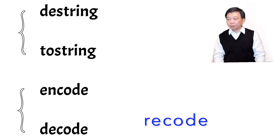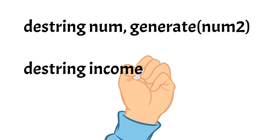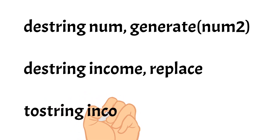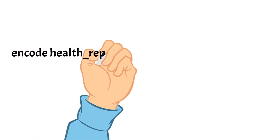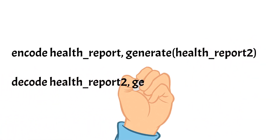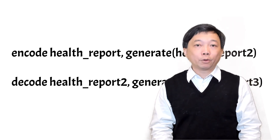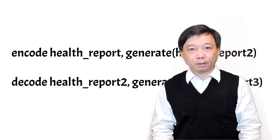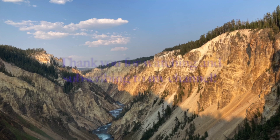Today we discussed the destring and tostring commands, which convert string variables containing number characters to numeric variables and vice versa. We also looked at the encode and decode commands, which convert string variables containing non-number characters to numeric categorical variables and vice versa. Thank you very much for watching this video — see you next time.